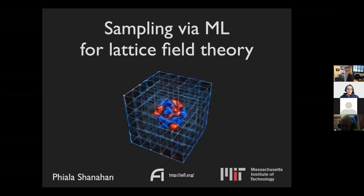Her research revolves around theoretical nuclear and particle physics. She is working to understand how the fundamental degrees of freedom of quantum chromodynamics eventually give rise to the hadrons and the entire atomic nucleus. Making this connection explicit is an extraordinarily computationally challenging problem. That's why today she will talk to us about how machine learning can help make progress in that field. Fiala, please, whenever you're ready.